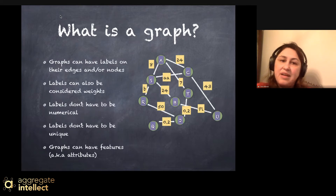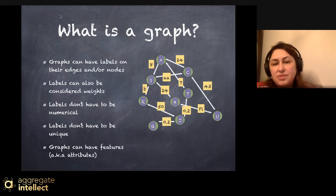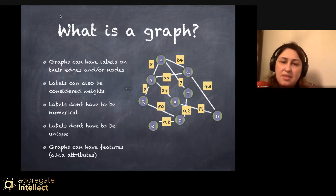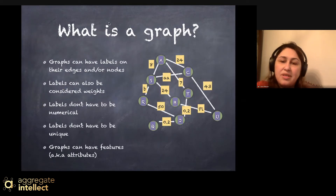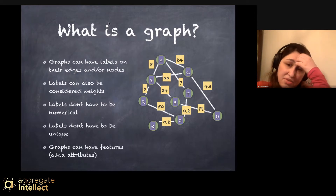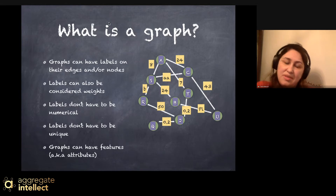Graphs can have labels on either the edges or their nodes. Labels can also be considered as weight — labels on the edge can be considered as a weight for a relationship between nodes. Labels don't have to be numerical; they could be a string, numerical, or any shape. Also, they could be repeated — labels don't have to be unique, especially if we use them as a weight.